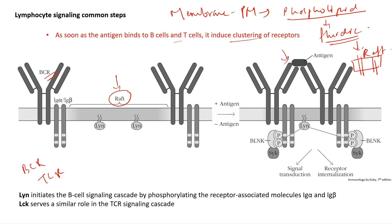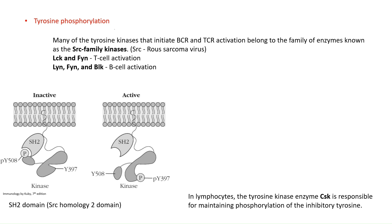So the first step is that antigen binding induces clustering of receptors that were previously far apart — now they come close together. The next step is tyrosine phosphorylation, meaning activation of the cytoplasmic domain of the receptor. For the B cell receptor we have Ig alpha beta; for the T cell receptor we have CD3.